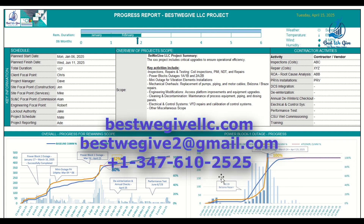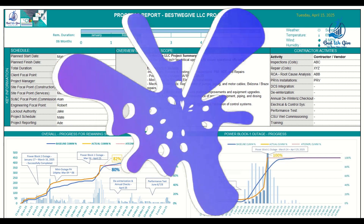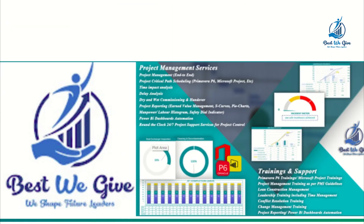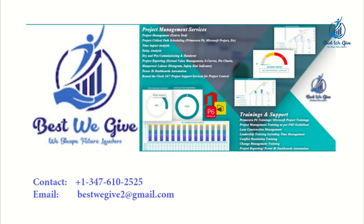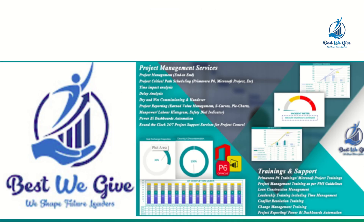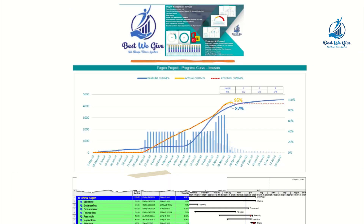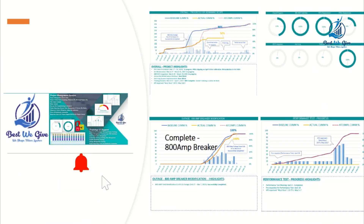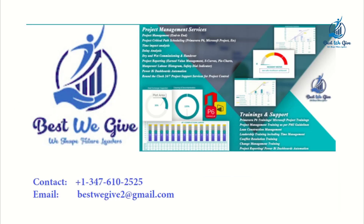If you need more details, you can contact us at bestwegivetwo@gmail.com or at +1-347-610-2525. If you want to customize, modify, or create a new dashboard, let us know via that number or email address — we can work together to prepare and deliver your dashboard. Best We Give is the name, the number and email are there. Do contact us and we'll go from there. Thank you and see you in the next video — please like and subscribe our channel for more good videos. Thank you, bye!